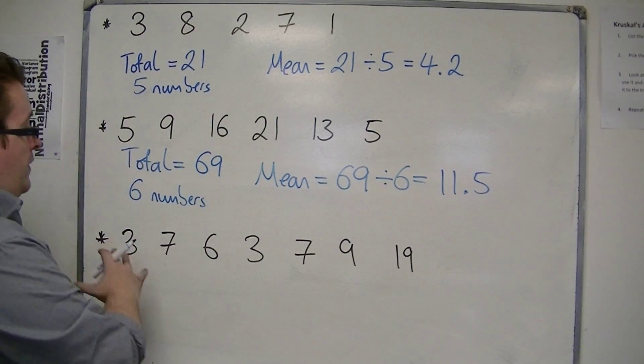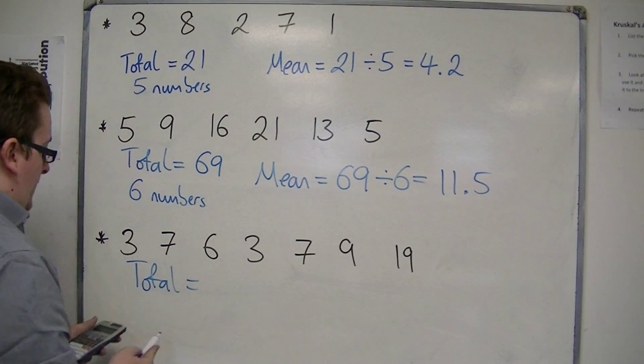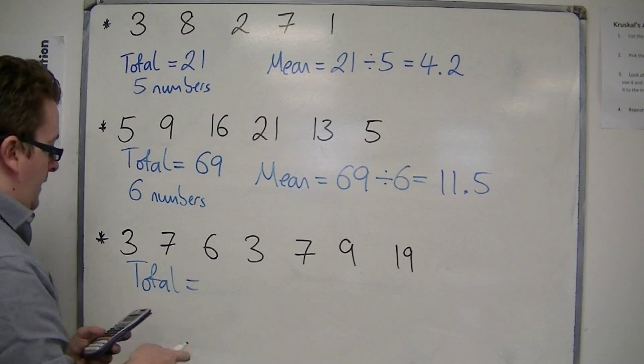And then finally, for the last set, we add them all together. 3 plus 7 plus 6 plus 3 plus 7 plus 9 plus 19 is 54.